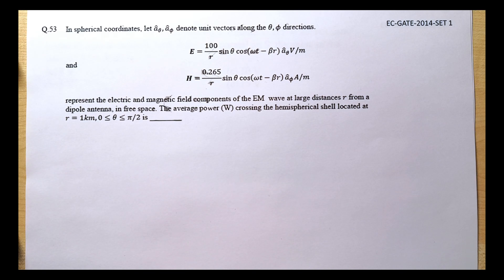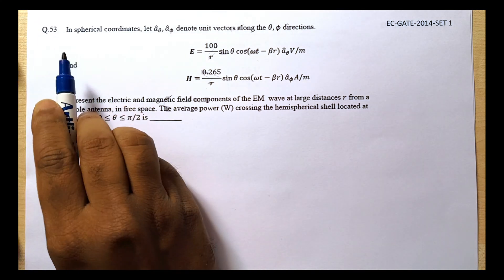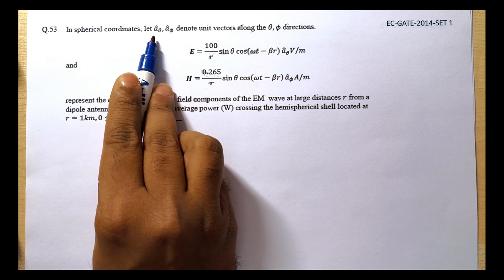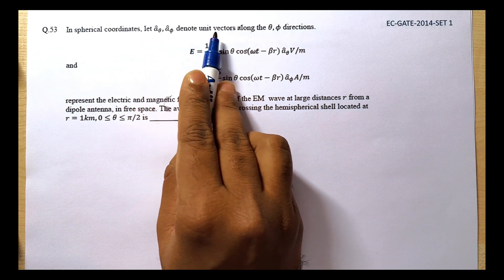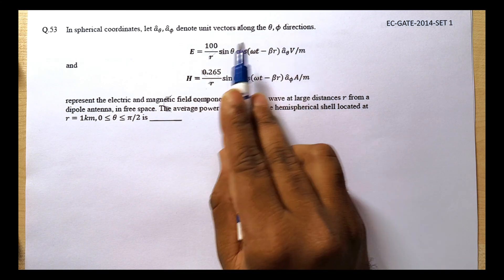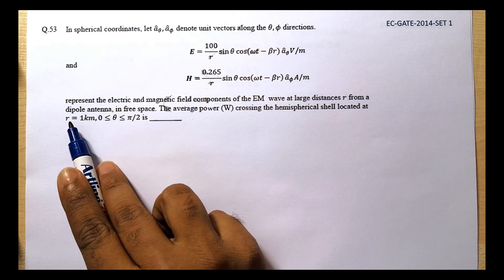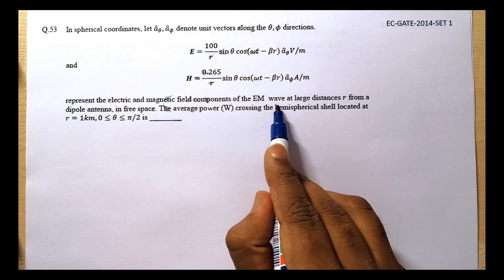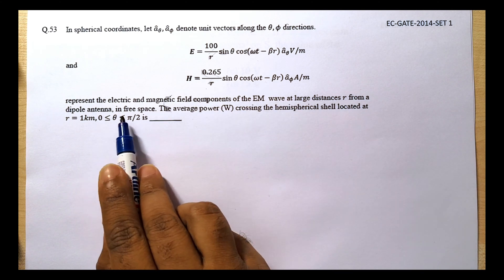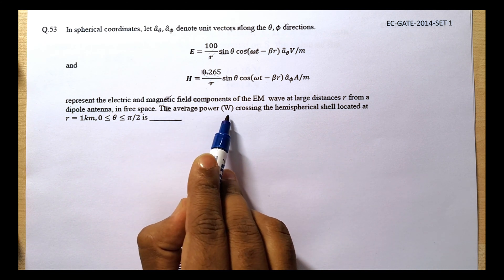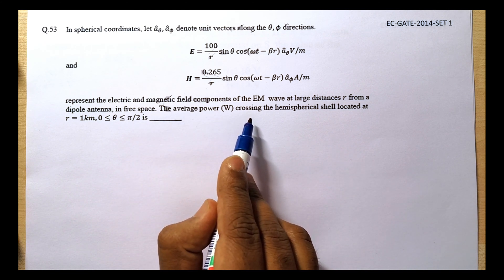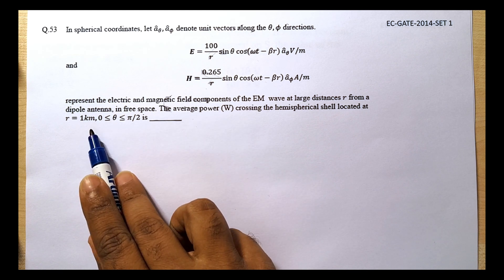Welcome to another problem-solving episode of Vedanta. Today we have a problem from GATE 2014, Set 1. In spherical coordinates, let â_θ and â_φ denote unit vectors along the theta and phi directions. E and H are given expressions representing electric and magnetic field components of an electromagnetic wave at large distance r from a dipole antenna in free space. We need to find the average power crossing the hemispherical shell located at r = 1 km and θ between 0 and π/2.